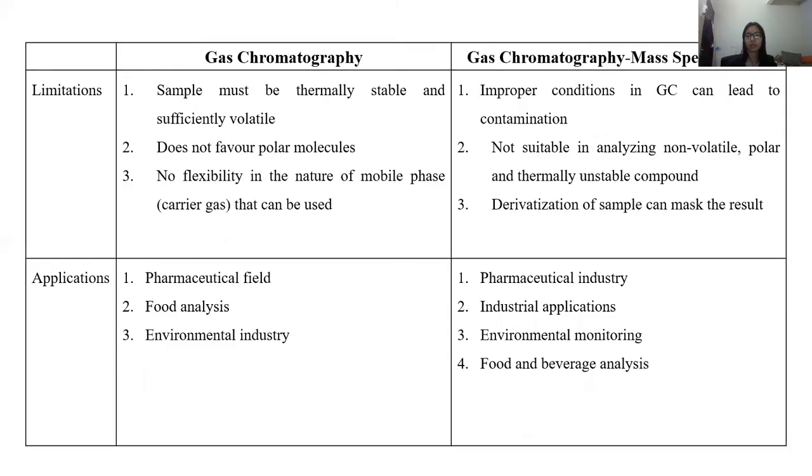In terms of limitation, because GC-MS is a combination of two techniques, if there is improper condition in GC, it can cause contamination. But for GC itself, it doesn't have this limitation. And another one is for GC-MS, if there is dimerization, then it can mask the results.